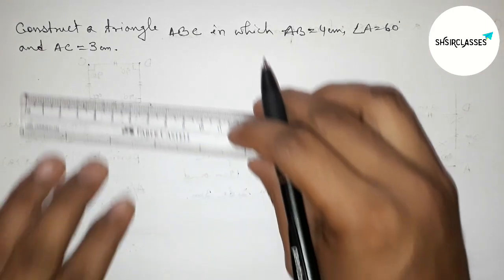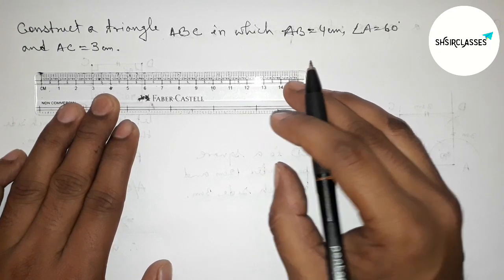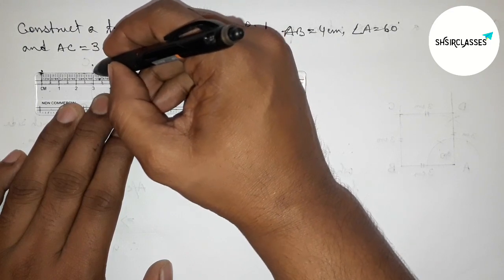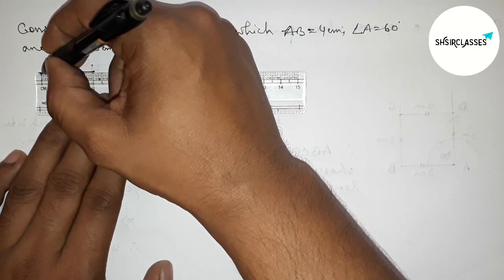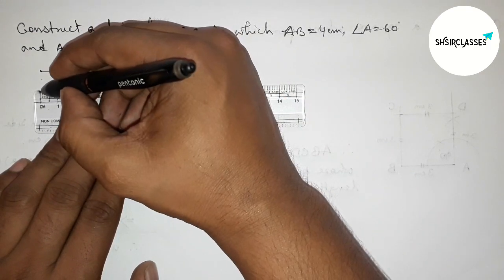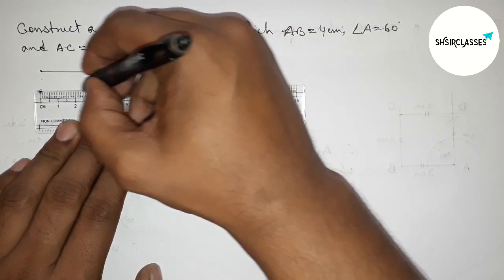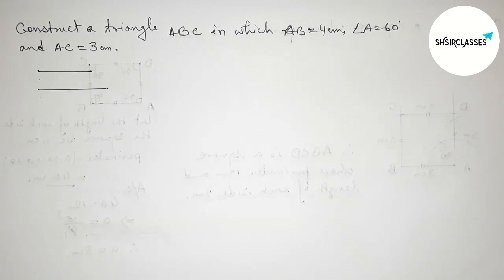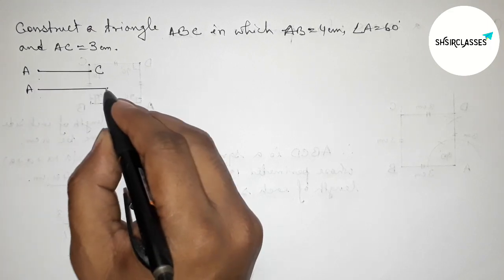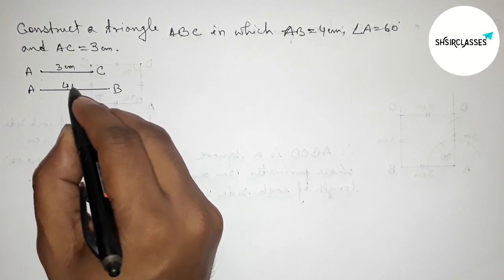First of all, let us draw the given two sides. First, drawing a 3 centimeter line — starting from zero, this is the 3 centimeter line. Then drawing another 4 centimeter line. So this one is the AC line, which is 3 centimeters, and this one is the AB line, which is 4 centimeters.